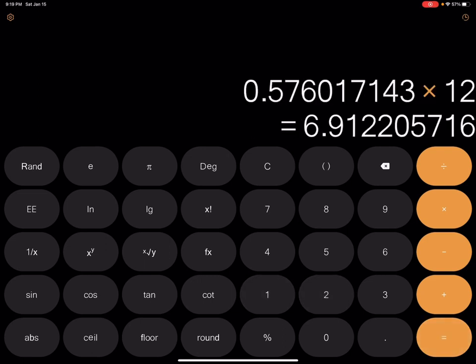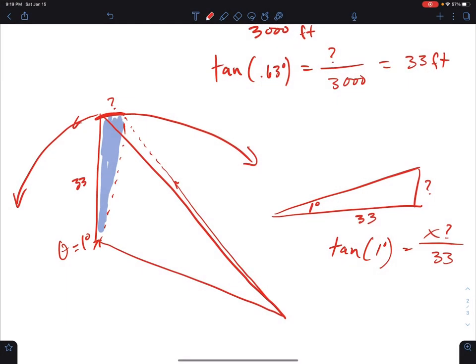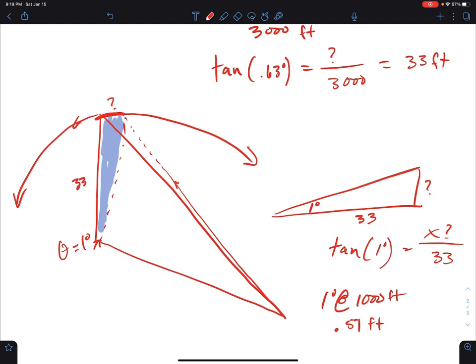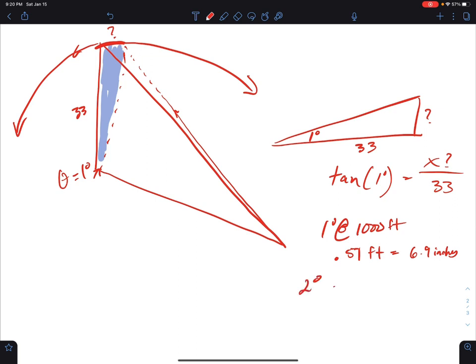0.576 times 12. Six, almost seven, let's call it seven inches. 6.9. So one degree at 1,000 feet equals 0.576 feet or 6.9 inches. So that would be almost 14 inches for two degrees. Two degrees almost equals 14 inches.